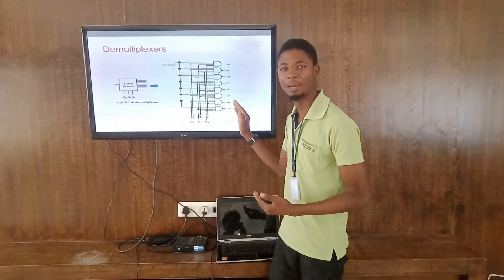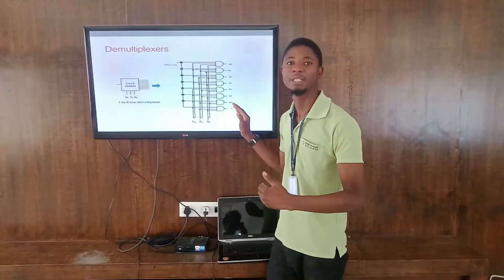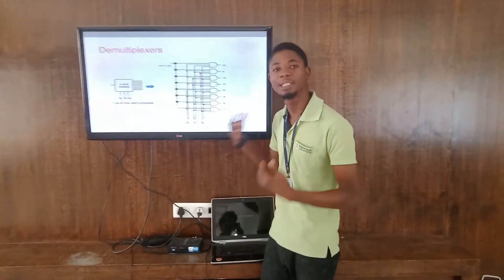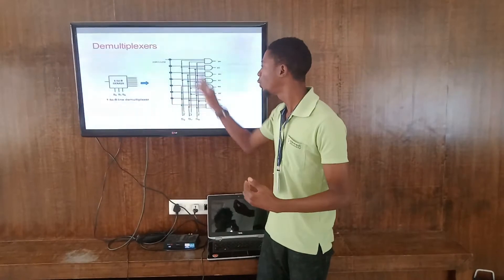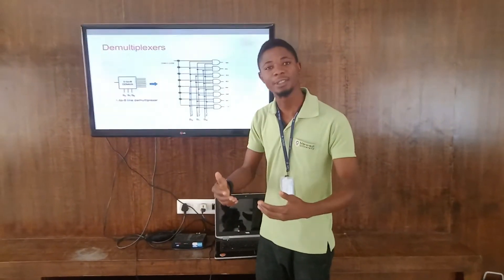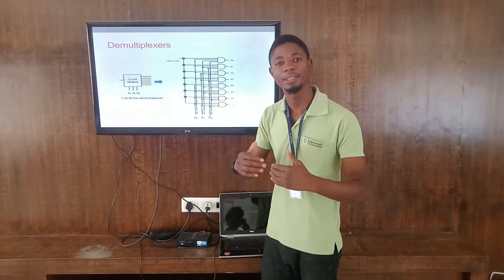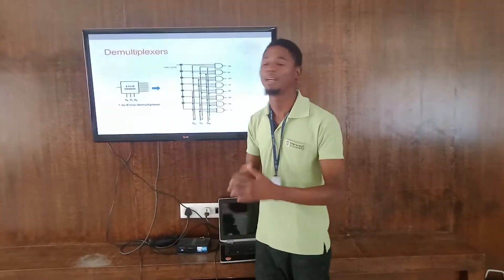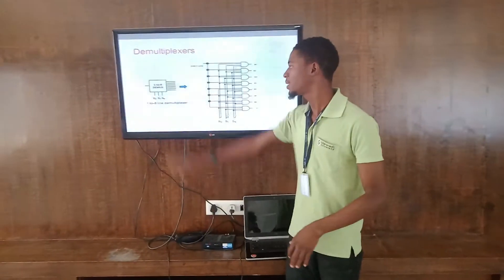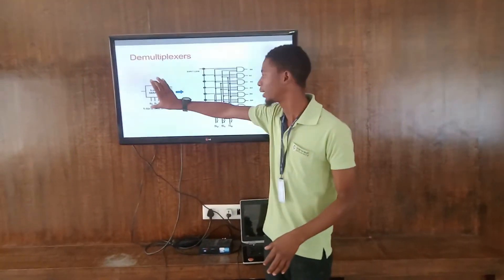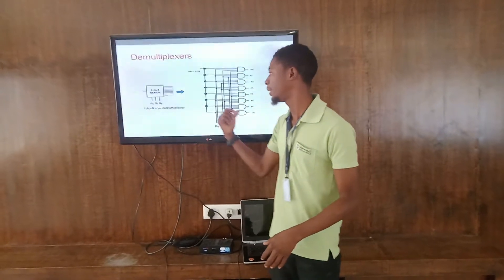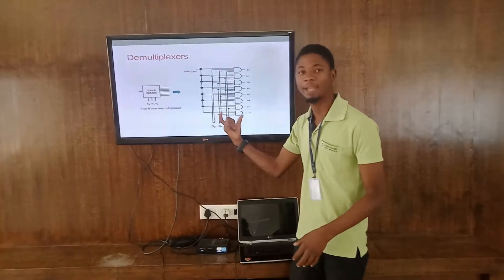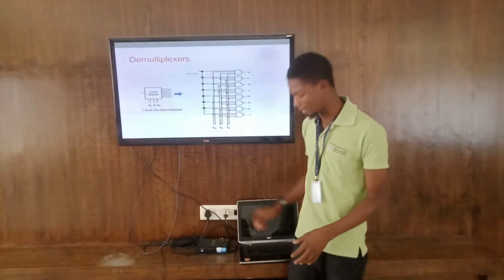The subscribers are waiting to receive a message, and the selection line determines which subscriber receives the first message and which receives the next, based on what the demultiplexer does. This is the same input that we receive here — this is the first diagram we covered, and this is the corresponding logic diagram.